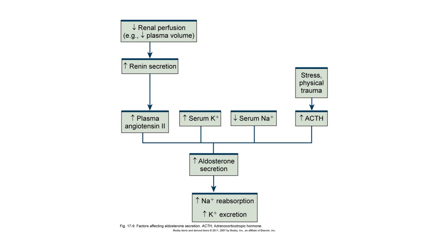Other factors that cause aldosterone production include stress and physical trauma, which increase ACTH production and thereby stimulate the adrenal gland. Low serum sodium also stimulates aldosterone production. The end result is reabsorption of sodium and increased excretion of potassium.